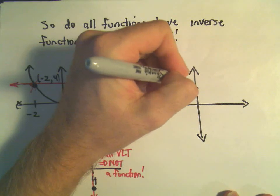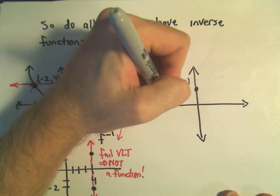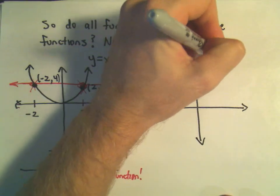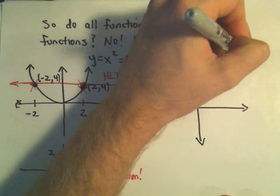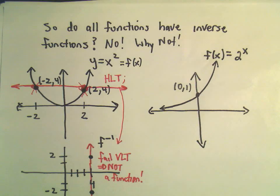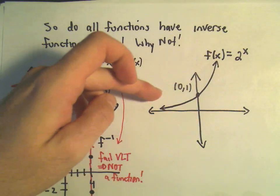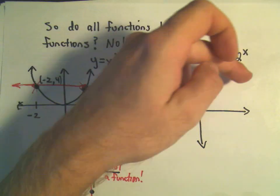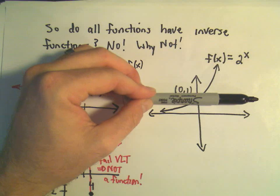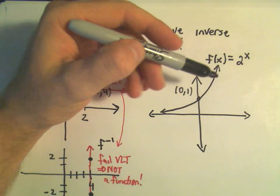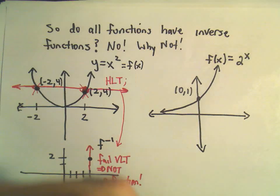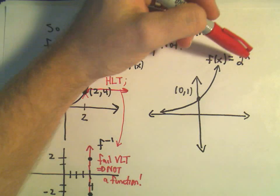Which functions do have inverses? Well, the types of functions that do have inverses are functions that pass the horizontal line test. Maybe you've seen exponential functions. Here's some function 2 to the x — and if you haven't seen exponentials, don't worry about that. The big idea is that this function is now going to pass the horizontal line test. No matter where I put a horizontal line, it's going to hit the graph in at most one place.